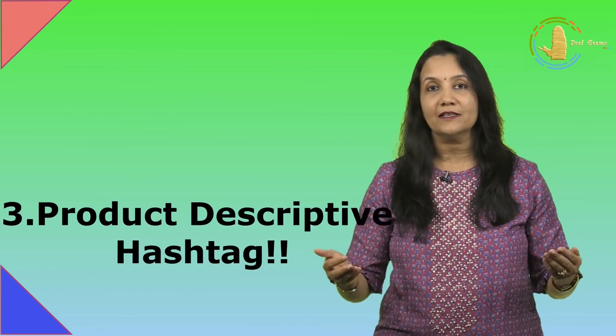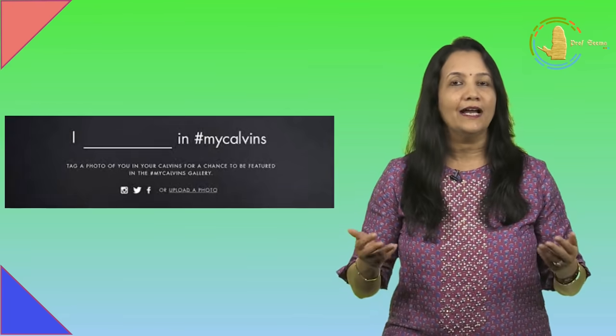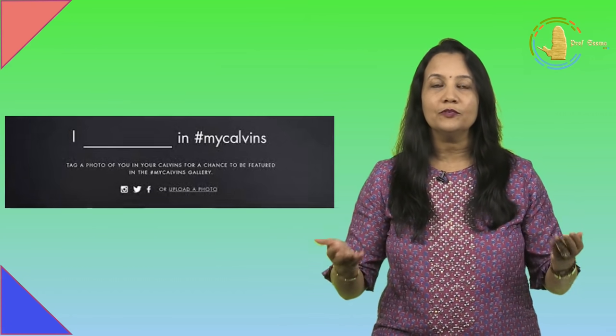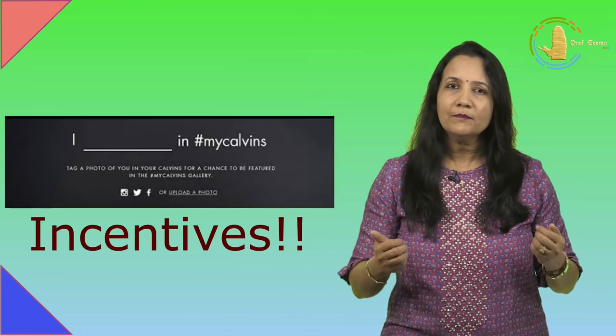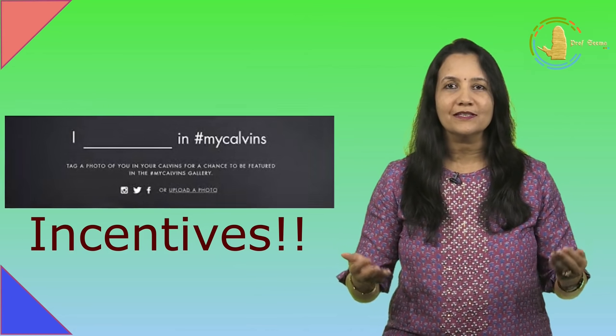Another type of hashtag is Product Descriptive Hashtags. These hashtags promote a particular product. Brands can encourage the customers to post their pictures using that product. For example, Hashtag MyCalvins, encouraging people to post their pictures with Calvin Klein products. There should be some kind of incentive for people to post their pictures using your hashtag. Incentives can be social recognition by the brand when a brand shares their post on their social account, or it can be some additional discount for next purchase or evoking of emotion.